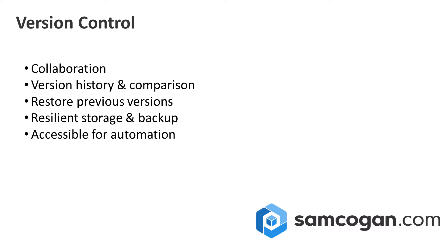A version control system helps by allowing you to store files centrally and providing a way to merge changes from multiple different people. Alongside that, it also gives you a version history and the ability to compare between versions, so you can look at what changes were made and compare different versions to see what the difference is. And if you don't like those changes, a version control system will also give you the ability to roll back — to restore back to a previous version. Because it's tracking every single change, you can roll back and say 'I want to go back to this specific version.'